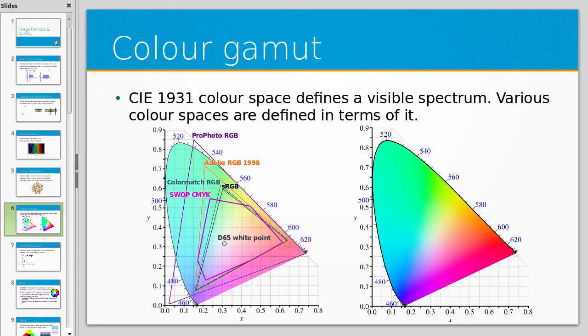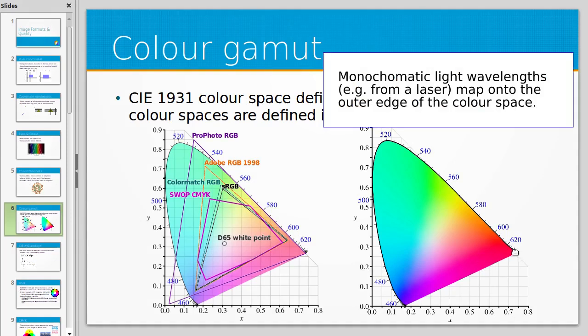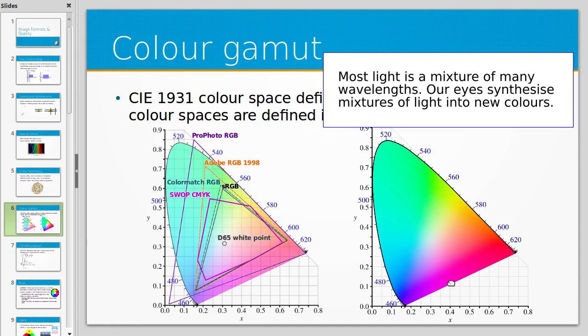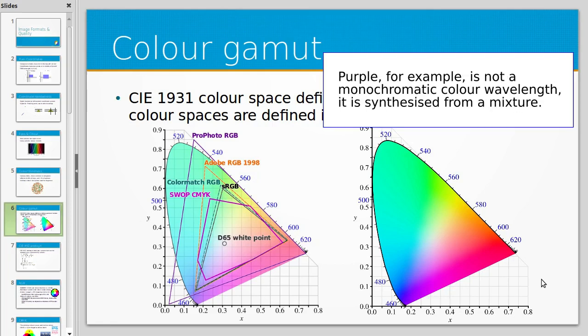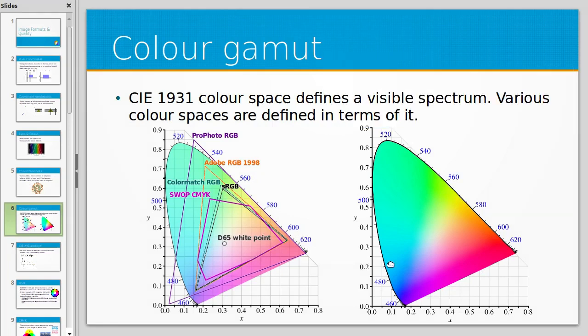You might have heard the term color gamut. The International Committee on Illumination (CIE) defined the CIE 1931 color space in 1931, which maps wavelengths of light onto colors. This two-dimensional diagram represents various color spaces. The most important is probably SRGB, which many monitors default to. SRGB simplifies the color space into a geometric shape, usually a triangle, approximating part of the ideal CIE physical color space with simpler mathematics.